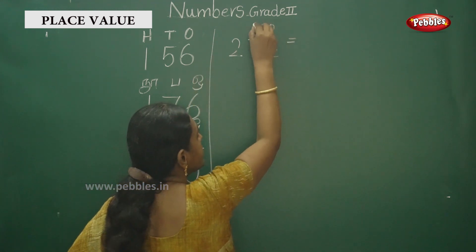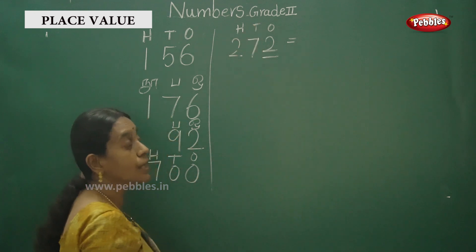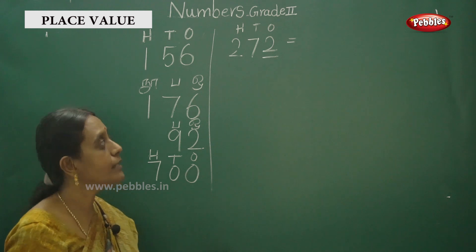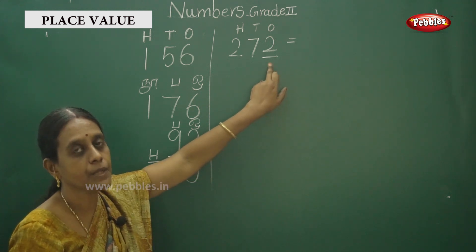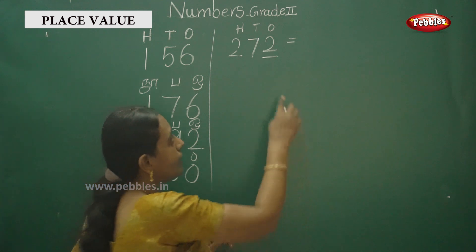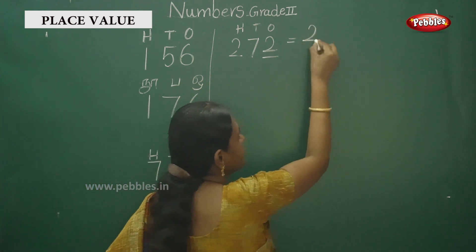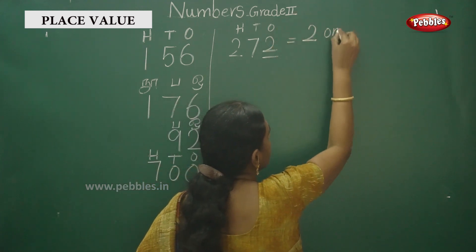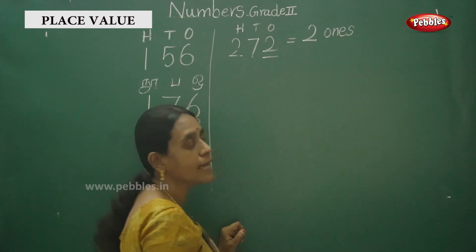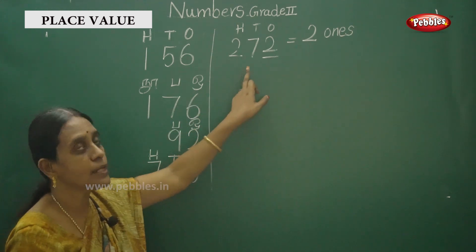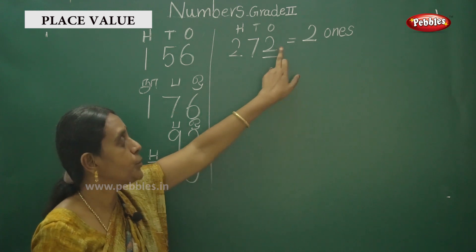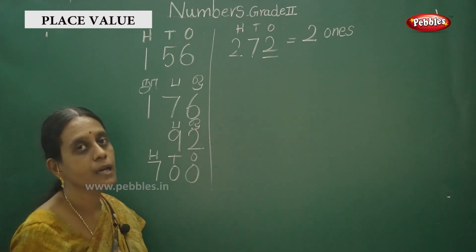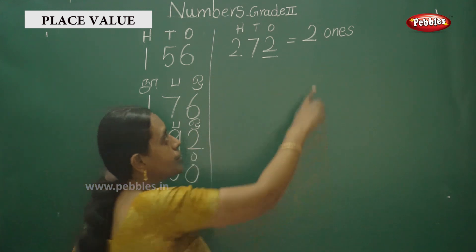First, you have to write the same way — ones, tens, and hundreds. First, you can write the place value. Ones, tens, hundreds — you can write the same way. Find the place value of 2. We have discussed place value, so 2 is in the ones place.